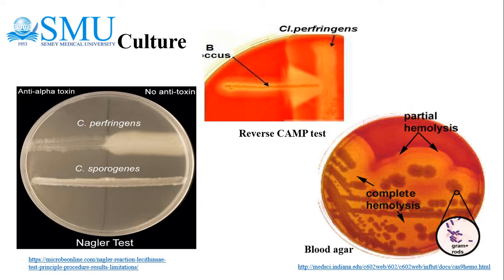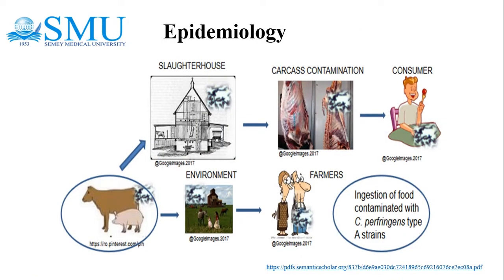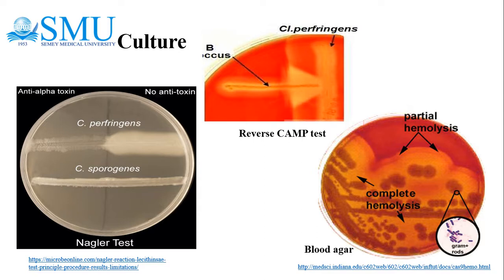In litmus milk, Clostridium perfringens produces a stormy clot reaction due to fermentation of lactose, producing acid and vigorous gas. On blood agar, Clostridium perfringens shows target hemolysis, with a zone of incomplete hemolysis surrounded by complete hemolysis.